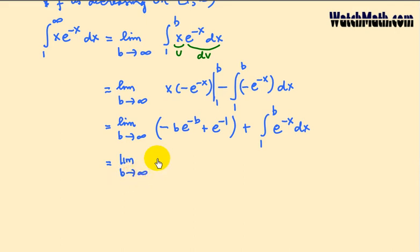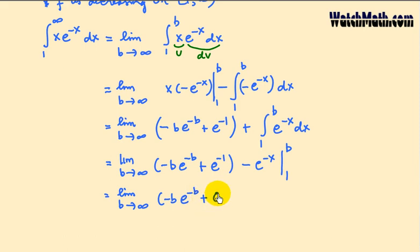This equals the limit as b goes to infinity of minus be^(-b) plus e^(-1) minus e^(-b) plus e^(-1).